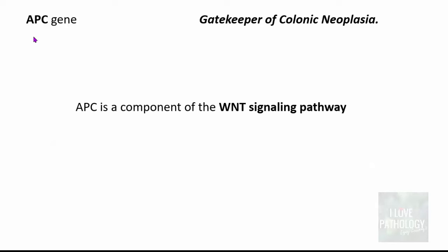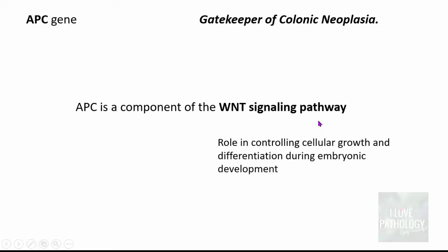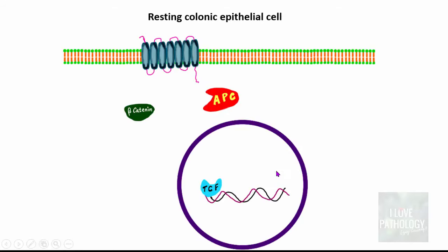The APC gene encodes for APC protein, which is a component of the WNT signaling pathway — a pathway that has a role in controlling cellular growth and differentiation during embryonic development. Let's understand what happens in a resting colonic epithelial cell. The cell has a plasma membrane, a nucleus, and a receptor for the WNT molecules.